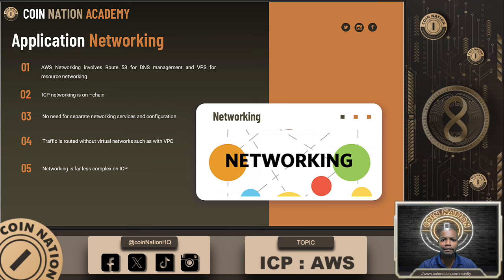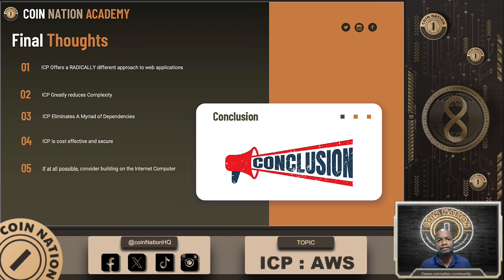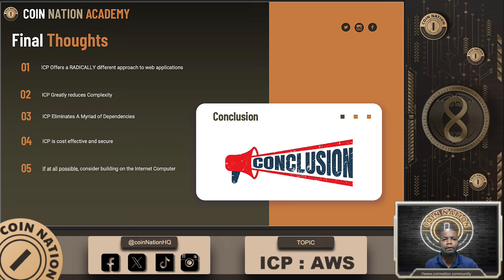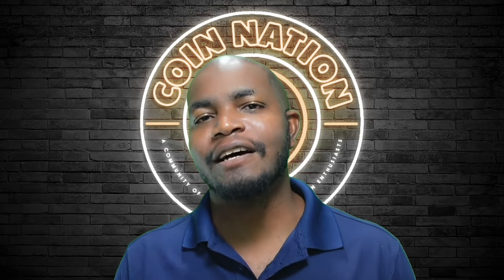As you can see, ICP provides a radically different and more streamlined approach to building applications. It removes the complexities, costs, and centralization issues that come with traditional cloud platforms like AWS. With ICP, you get automatic scaling, built-in security, and decentralized infrastructure, all while freeing up more time to focus on innovation. For developers, this is what Web3 is all about — removing unnecessary layers of management and offering more freedom to build scalable, trustless applications. If you're looking to move beyond the limits of Web2 and embrace the future, ICP is the perfect place to start. That's all I've got for you today, citizens.